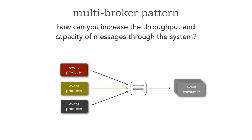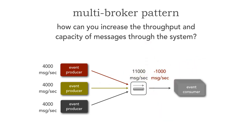Most brokers can process around eleven thousand messages a second non-persisted. Persisted is usually a threshold of around four thousand messages a second, but eleven thousand is about the peak for most brokers. The problem is each of these producers is pushing four thousand messages a second, so with three event producers all producing four thousand messages a second, that broker can only process eleven thousand — meaning we have a deficit of one thousand messages a second and can't keep up.